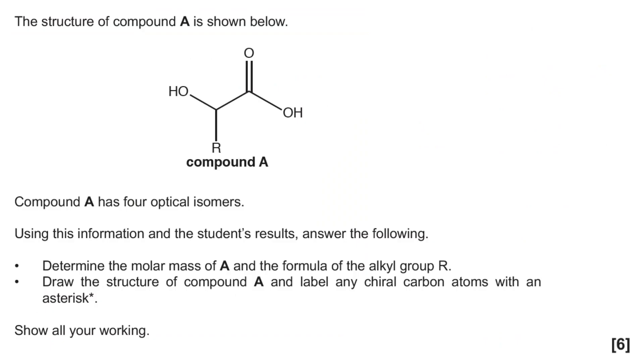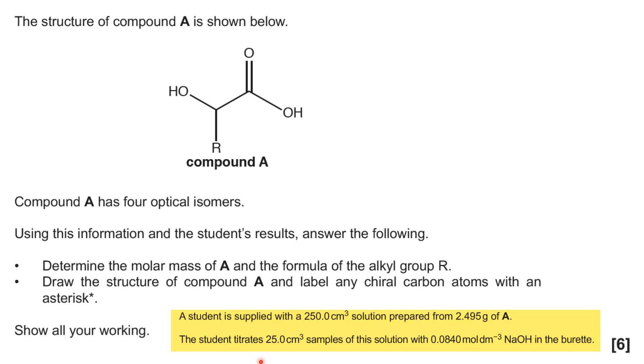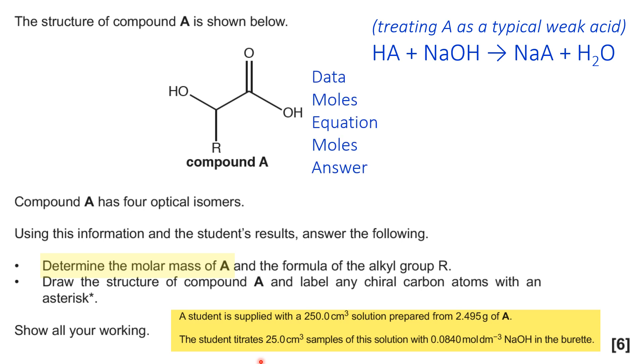So it goes on to give us the structure of compound A and it says it's got four optical isomers. They want you to use this information and the student's results. So let's look at the information from before and also the student's results, which was 22.50. So they want us to determine the molar mass of A. So put in the equation for the reaction between HA and sodium hydroxide in the titration. And you can do a data moles, equation moles, answer type calculation. So we know that there's 25 centimeter cubed samples of our acid, so that goes there. And we know that sodium hydroxide is in the burette and the concentration is 0.0840. And therefore, the 22.50 is the average or mean titer worked out before.